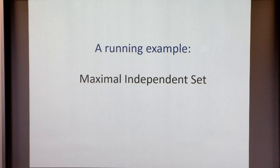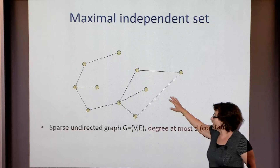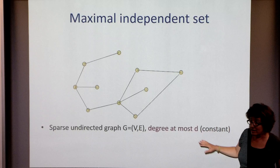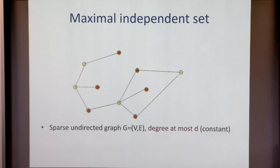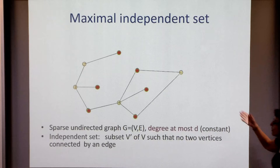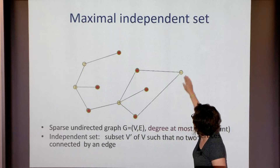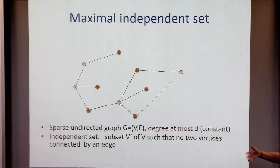For maximal independent set, you're given a sparse undirected graph with degree at most d — we'll assume d is a constant. An independent set is a subset of nodes where no two are connected by an edge. Maximal means you can't add another node without violating independence — if you add any other node, you'd have an edge connecting two nodes in the set.